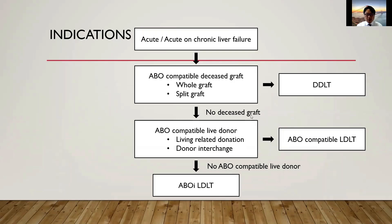If there is no deceased graft and the patient is at a critical stage, we will work up the patient's potential living donors. We perform living related donations, and we also try to pair up incompatible donors to perform donor interchange. But over the years, we have only performed three pairs, and we need to have a relatively cold pair waiting for this hot pair, which is not always possible.